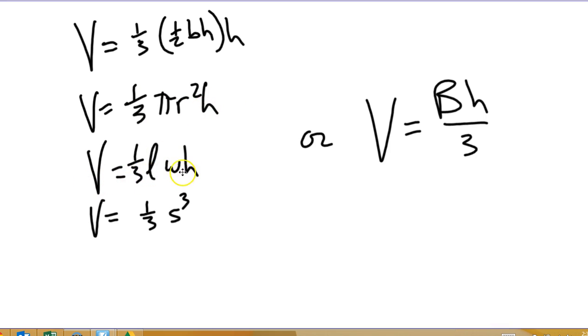1 third lwh, this is a rectangle, lw is length times width is for a rectangle, so this is 1 third lwh would be the volume of a rectangular pyramid. And v equals 1 third s cubed, where it would be a square pyramid and 1 third of that.